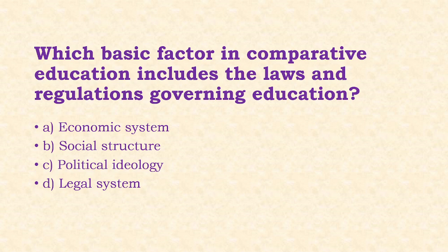Next: Which basic factor in comparative education includes the laws and regulations governing education? Options: economic system, social structure, political ideology, legal system. The answer is option D, that is the legal system.